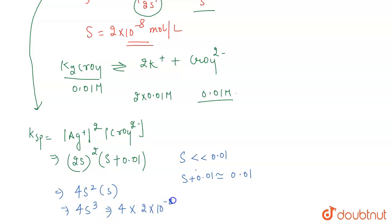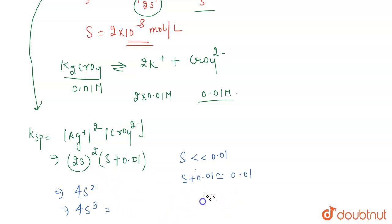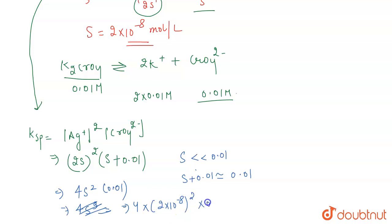Since we approximated s + 0.01 as 0.01, the Ksp expression becomes 4 × (2 × 10⁻⁸)² × 0.01. This gives Ksp = 4 × 4 × 10⁻¹⁶ × 0.01, which equals 16 × 10⁻¹⁸. So the solubility product of Ag₂CrO₄ is 1.6 × 10⁻¹⁷.